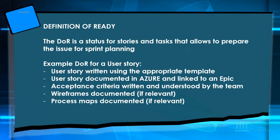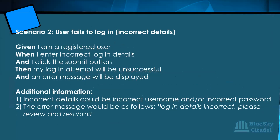The conditions your user story must meet include: the user story must be written using the appropriate template — the 'as a, I want to, so that' format; the user story should be documented in Azure and linked to an epic; the acceptance criteria should be written and understood by the team; wireframes must be documented if relevant; and process maps should be documented if relevant. We're now going to open up for questions, then we'll look at the Azure Springboard to populate the backlog.